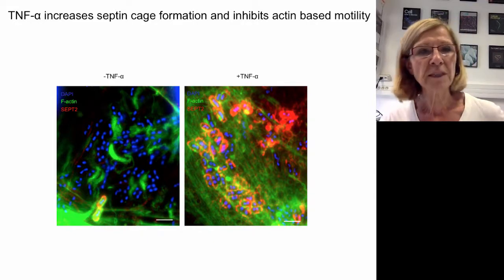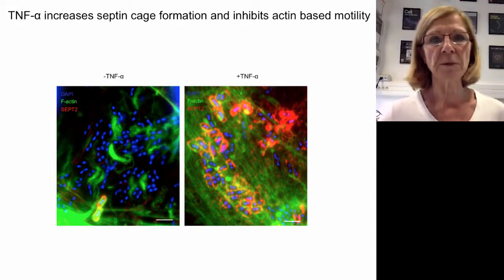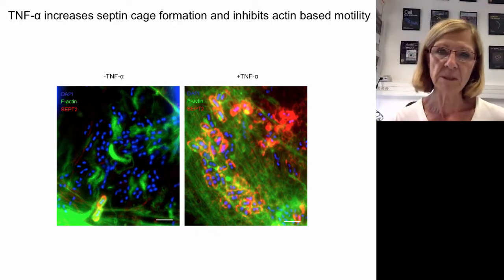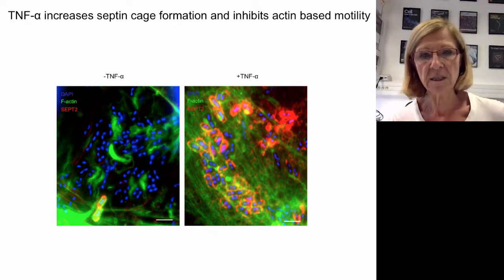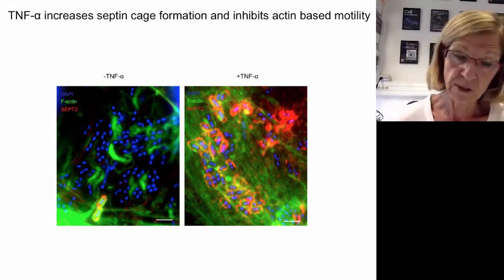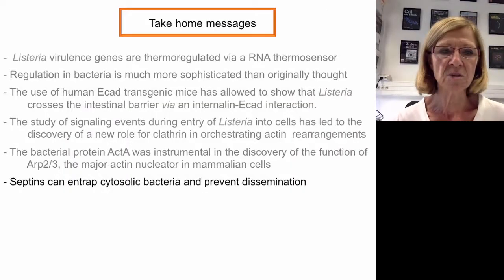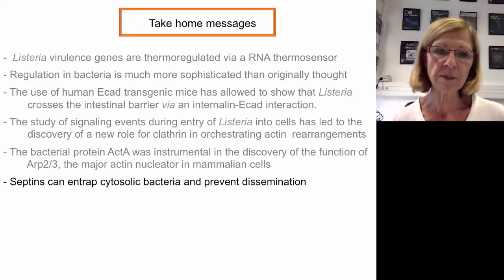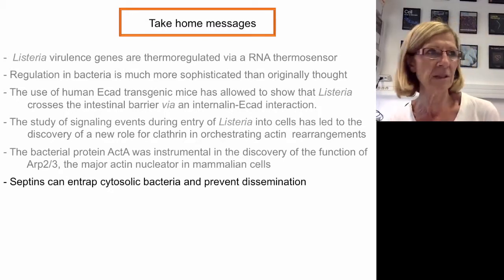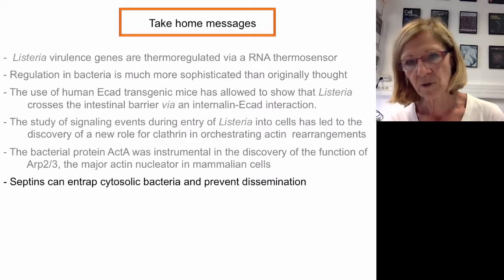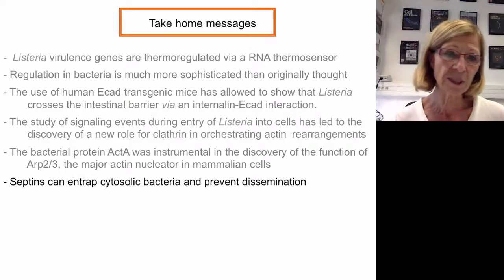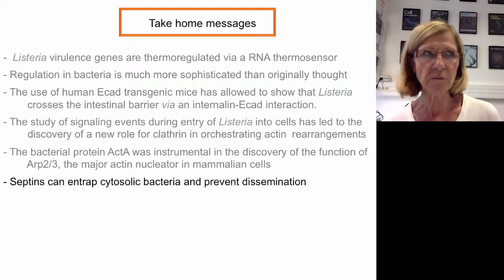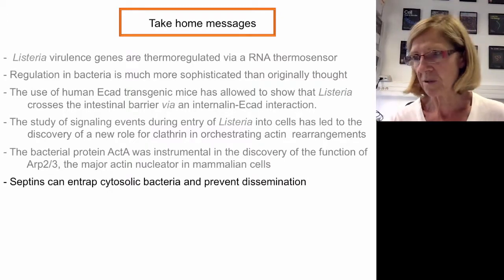Septins entrap cytosolic bacteria in cages and counteract actin-based motility and dissemination. We showed that treating cells with TNF-alpha increases cage formation, thereby inhibiting actin-based motility and dissemination within tissues. The take-home message is that septins can entrap cytosolic bacteria and prevent dissemination, and there is a link between cage formation and the process of autophagy.